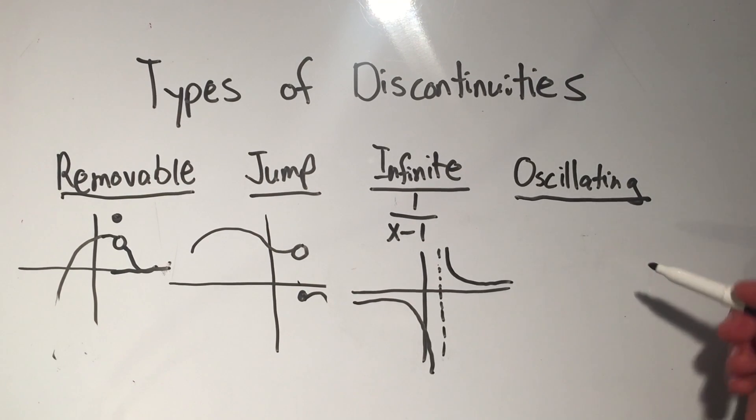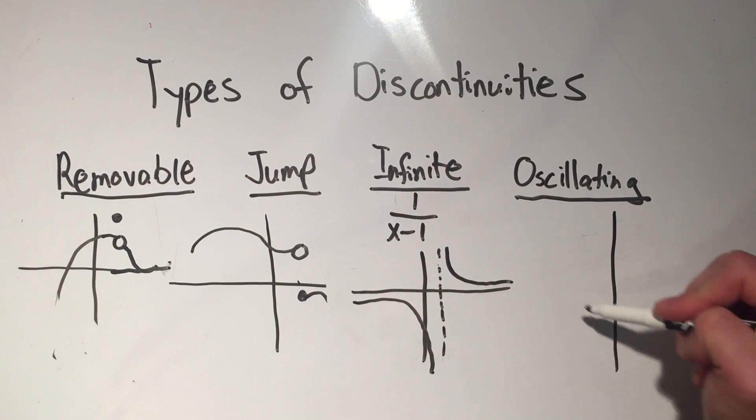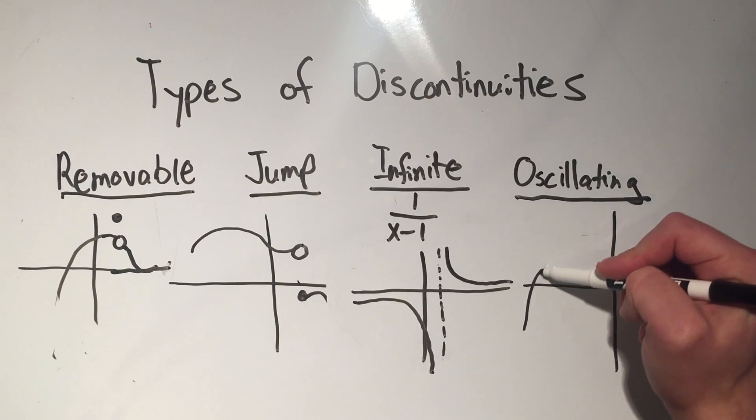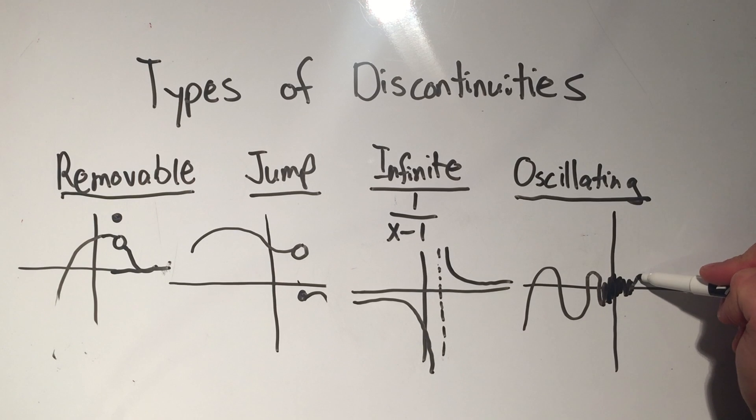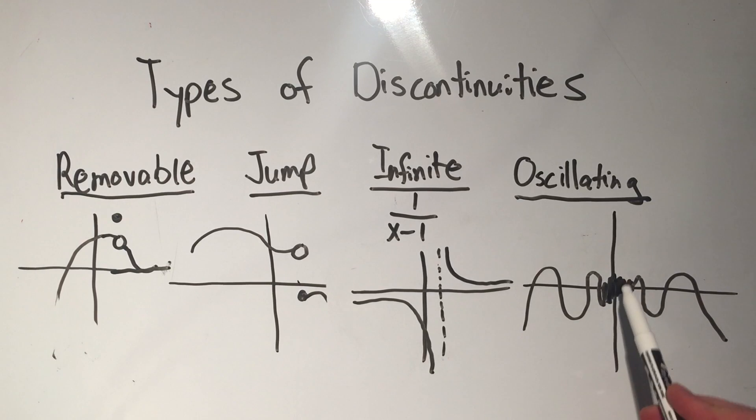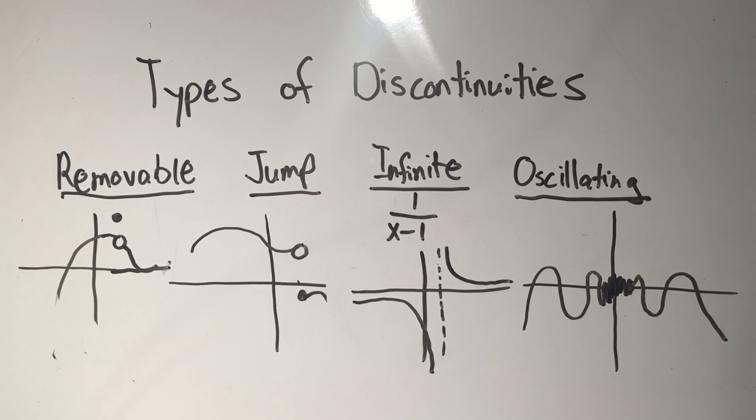The last one and the least common is an oscillating type of discontinuity. And that happens with periodic functions, so like sine and cosine. And what happens is you get really close to a point, the function starts to oscillate so quickly, you can't quite tell what's going on. So it's like oscillating like an infinite number of times in this little space. And so that happens with certain types of sine and cosine functions.